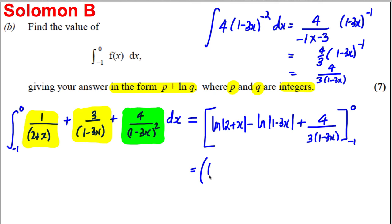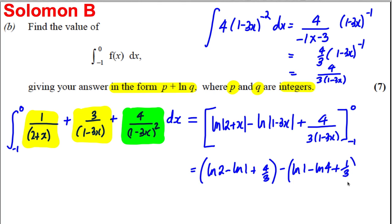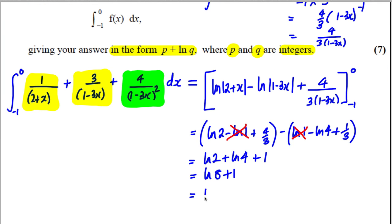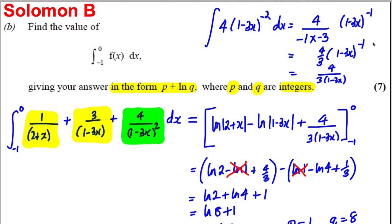Substituting x = 0 gives ln(2) − ln(1) + 4/3. Substituting x = −1 gives ln(1) − ln(4) + 1/3. Since ln(1) = 0, the result is: [ln(2) + 4/3] − [−ln(4) + 1/3] = ln(2) + ln(4) + 1 = ln(8) + 1. Writing in the required form p + ln(q): p = 1 and q = 8, both integers.